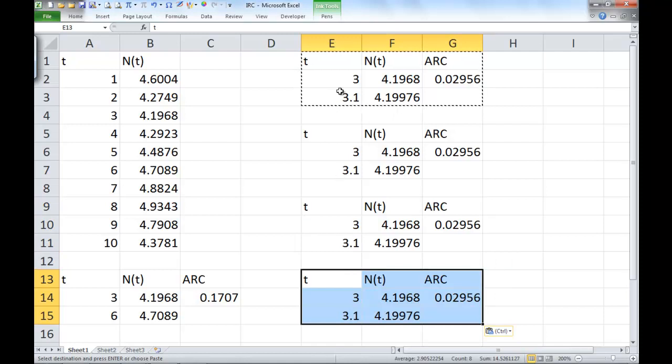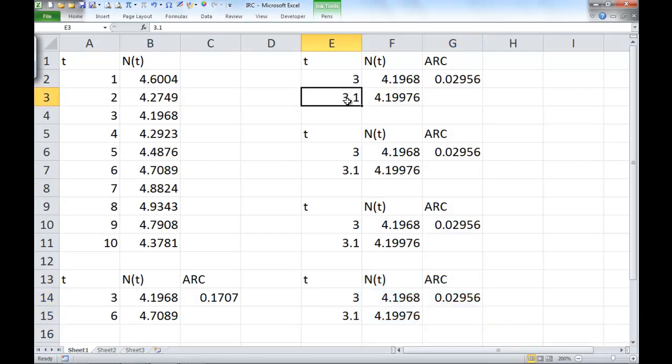So let's go back to each of these tables and change the second t value. And we want the t values to be closer and closer to 3. So in the first one, again, we have 3.1. And then the next table, I want it to be 3.01. And then in the next table, I want it to be 3.001. And in the last table, so the fourth time, we'll go 3.0001.